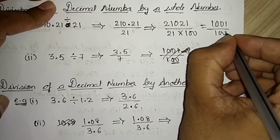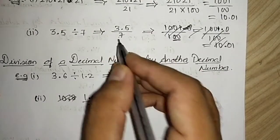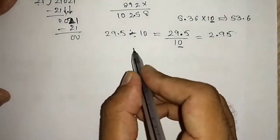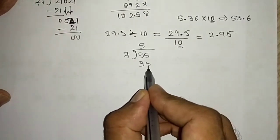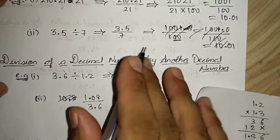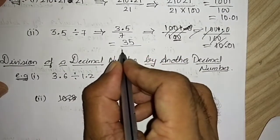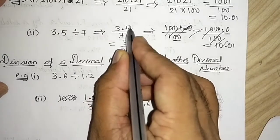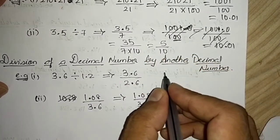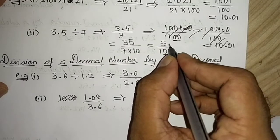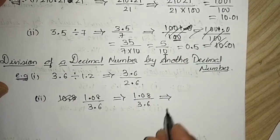Similarly, 3.5 ÷ 7: ignore the decimal point and divide 35 by 7. Seven fives are 35, so the answer is 5. But we removed one decimal point, so we write 35 ÷ (7 × 10), giving 5 ÷ 10. Shifting the decimal point one place to the left gives 0.5.